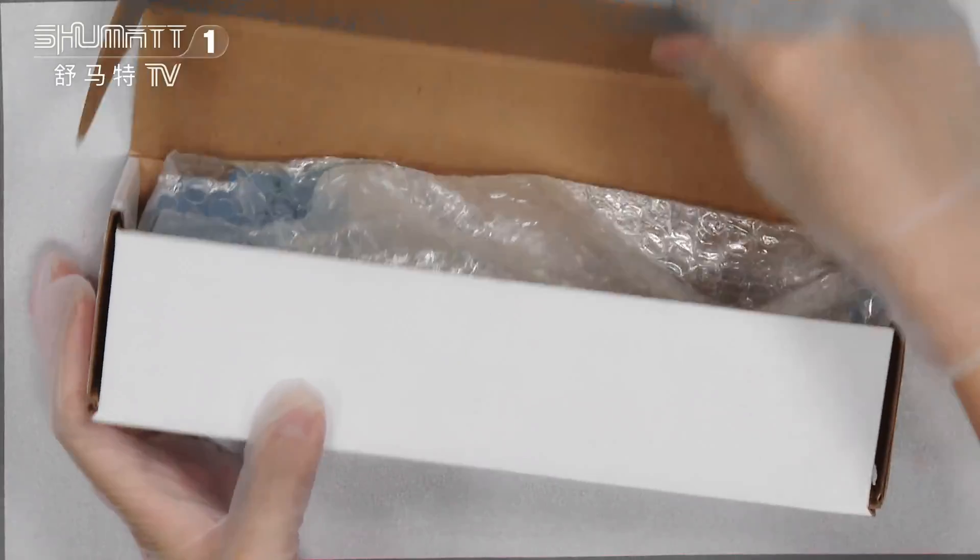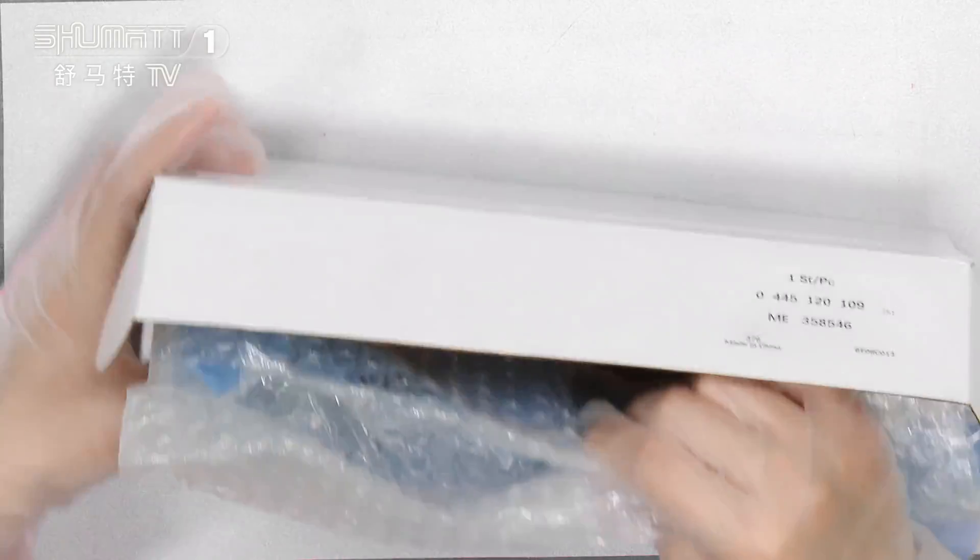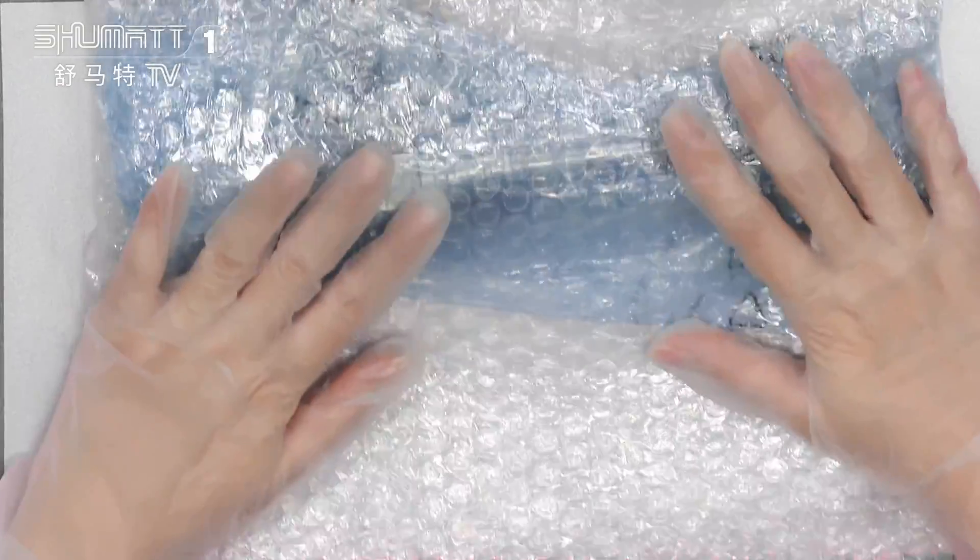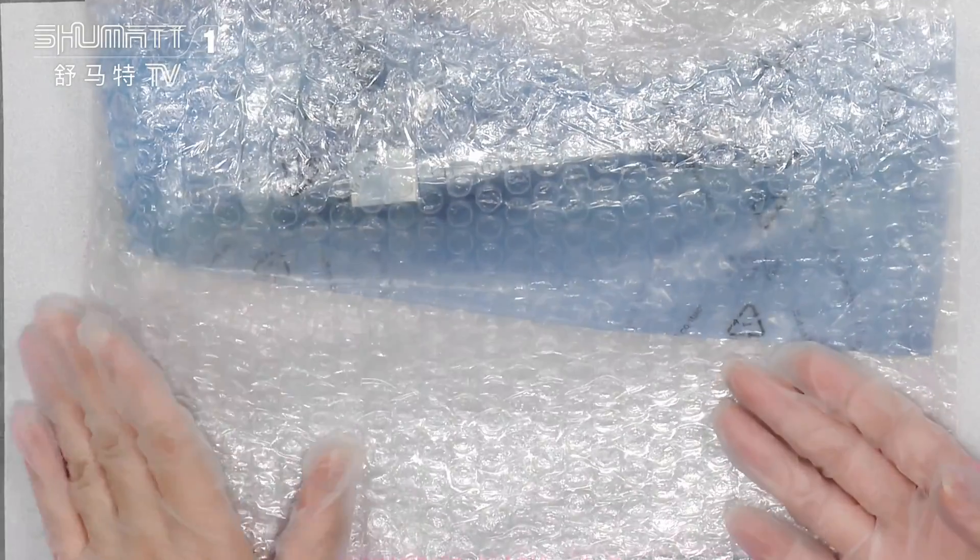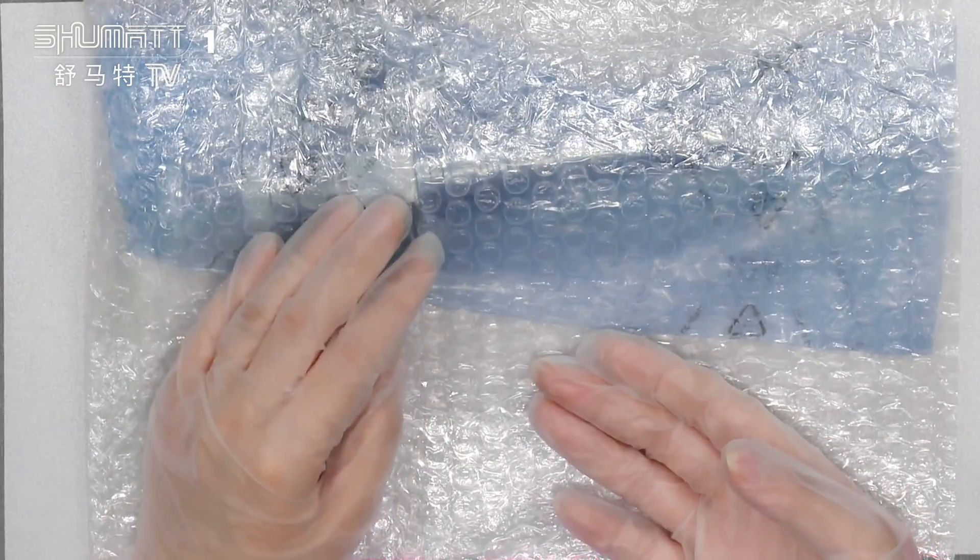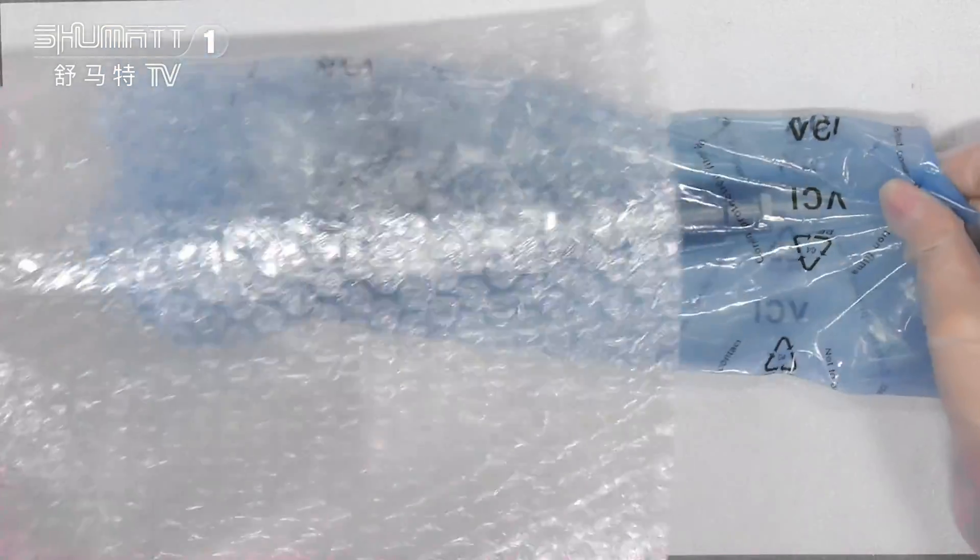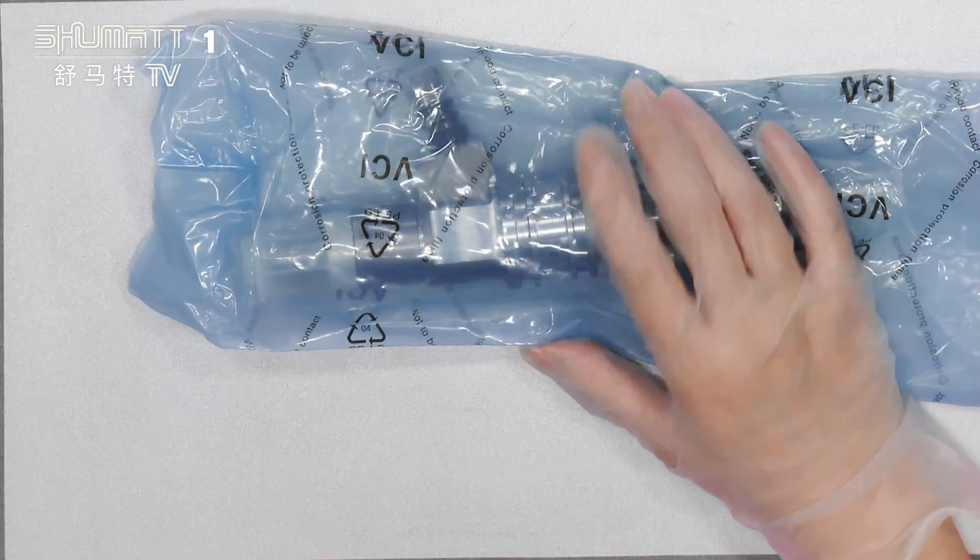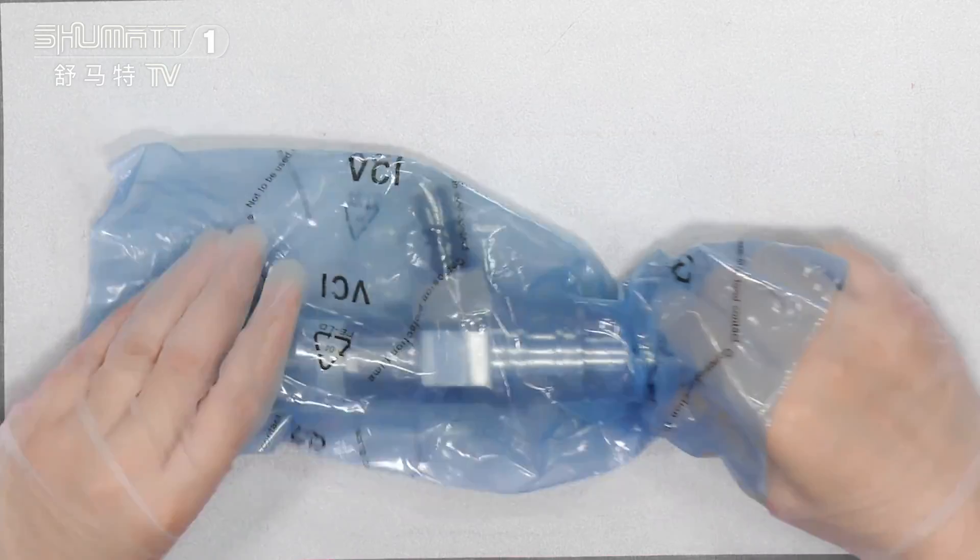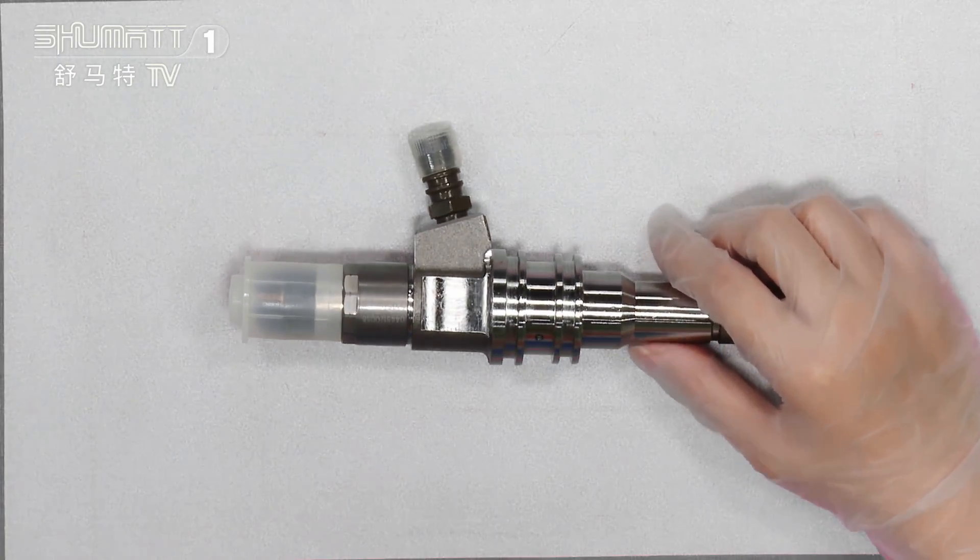Let's open it. Wow, that's inside. In the inside part we have two layers. The first layer is soft and it can better protect our fuel injector. The second layer is the VCI anti-rust bag. For the inside, let's take a look at this one.